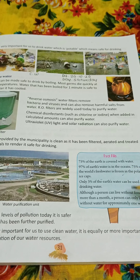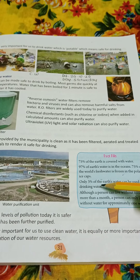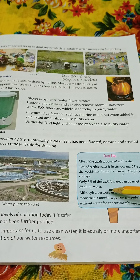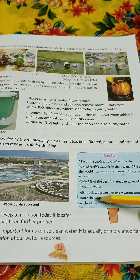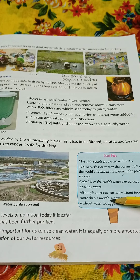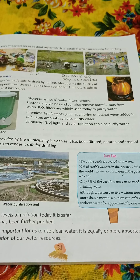75% of the world's fresh water is frozen in the polar ice cap — meaning it is frozen. Only 3% of the earth's water can be used as drinking water. Earth's water — only 3% can be used as drinking water. Although a person can live without food for more than one month, a person can only live without water for approximately one week.